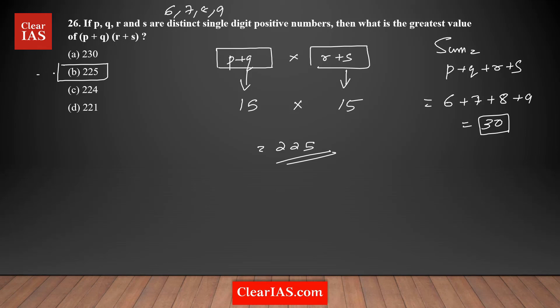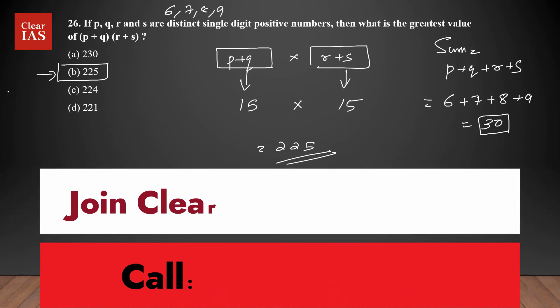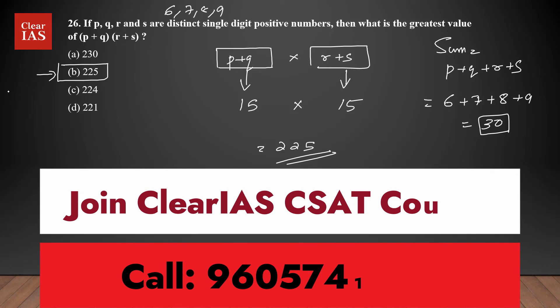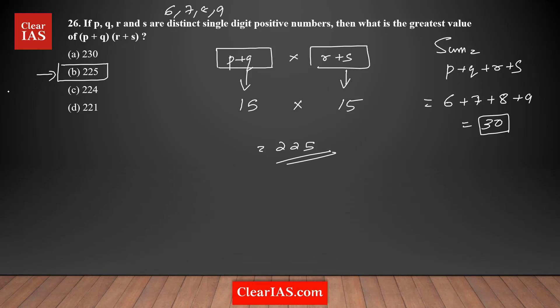So 225 is the maximum value — confirmed by both approaches. This second approach relies on knowing the property: if the sum of two terms is fixed, their product is maximized when both terms are equal. If you don't know this property, stick with approach one, but now you can apply it whenever you need to maximize a product given a fixed sum.